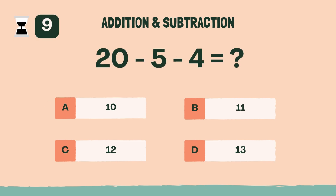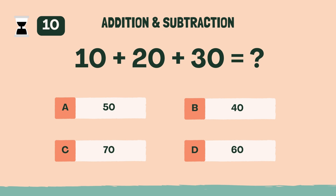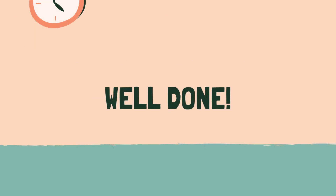What is 20 minus 5 minus 4? B, 11. What is 10 plus 20 plus 30? D, 60. Well done. Let's move on to the next category.